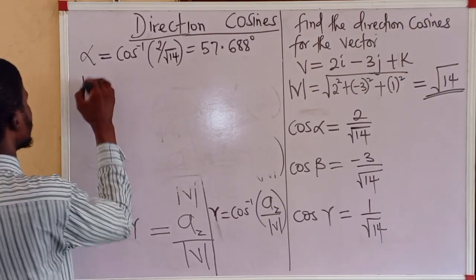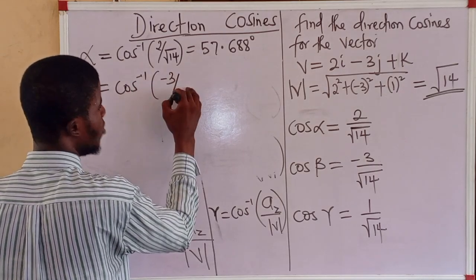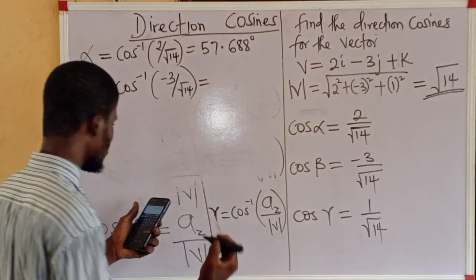Then, beta is the cos inverse of minus 3 upon root 14. And so, we have 143.301 degrees to 3 decimal places.